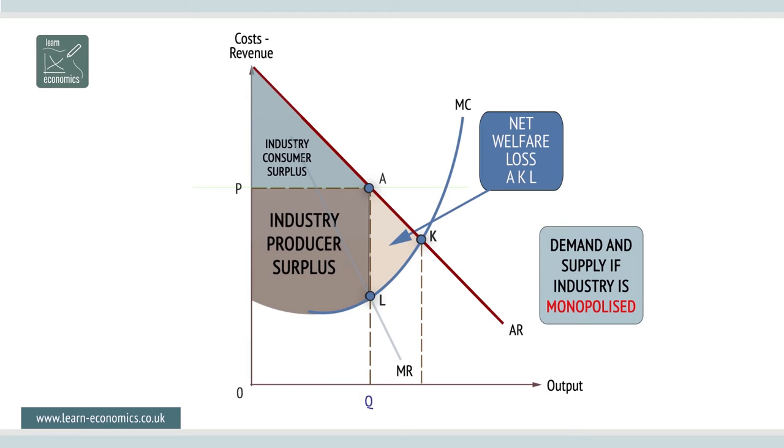So what can be done? Options range from opening up the market to competition, price capping, imposing regulations, deregulating if the monopoly is state controlled, and even nationalization, where the state takes over ownership and control.